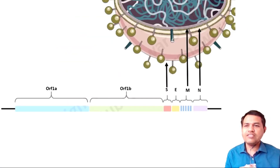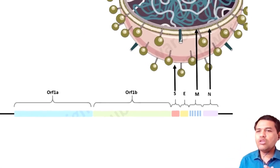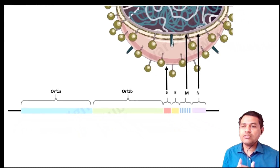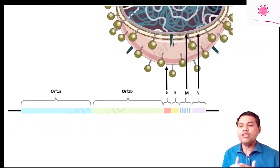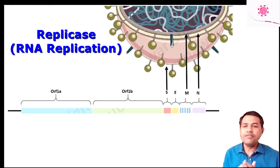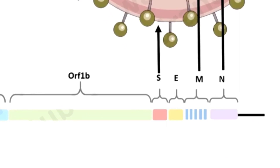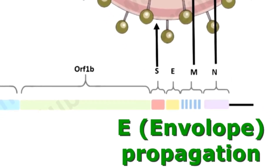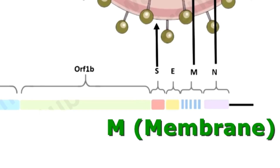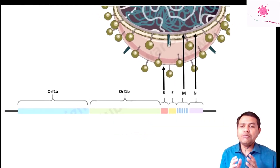To detect the presence of this virus, we look for the viral genome, which encodes all of its proteins. If the virus is inside the body, we can detect specific RNA sequences encoding those proteins. The most important regions include ORF1A and ORF1B, which encode the replicase enzyme critical for viral RNA replication, as well as the E protein region important for viral propagation and the M protein region encoding membrane proteins.